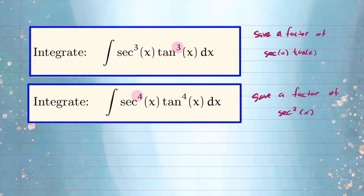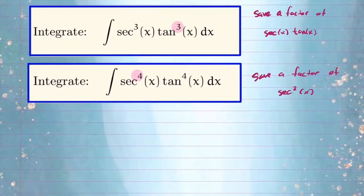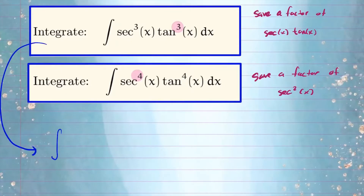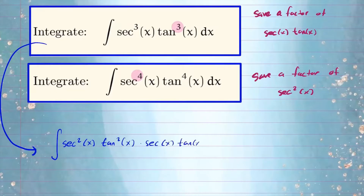Let's take a look at the first problem. Since tangent has an odd power, we're going to save a factor of secant times tangent — so let's pull out one secant and one tangent from the problem. Here's how it's going to look: we have the integral where if I pull out one factor from secant cubed, I'm left with secant squared, and if I pull out one factor from tangent cubed, I'm left with tangent squared of x. Then we have secant x times tangent x dx.